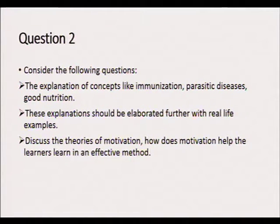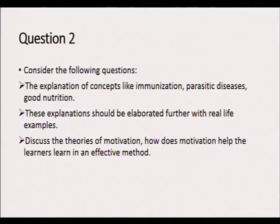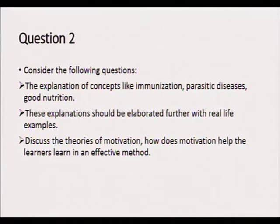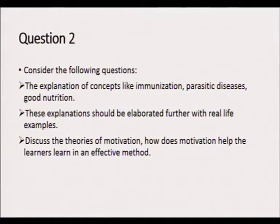Question two covers the explanation of concepts like immunization, parasitic diseases, and good nutrition. Explain what immunization means, what parasitic diseases are, and what constitutes good nutrition. Elaborate with real-life examples — for instance, what do we mean by people who have access to good nutrition, what are their life expectancies, and how does their body respond to illness? Discuss how full immunization against preventable illnesses benefits a country, including impacts on infant mortality rate and life expectancy.